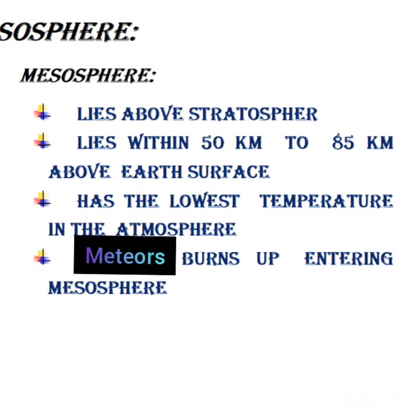The mesosphere has the coldest temperature in the atmosphere, dipping as low as minus 120 degrees Celsius. Meteors entering the atmosphere usually burn up in the mesosphere.